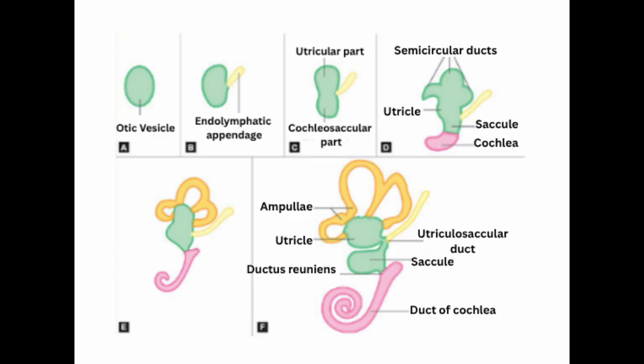The otic vesicle elongates within the first four weeks to form a tube-like structure called the endolymphatic appendage. A groove-like indentation then demarcates a tubular diverticulum on the medial side of the endolymphatic appendage, which differentiates into the endolymphatic duct and the saccule, continuing to grow until around age four. The otic vesicle is filled with endolymph, while the surrounding mesenchyme hollows out to create spaces filled with perilymph.